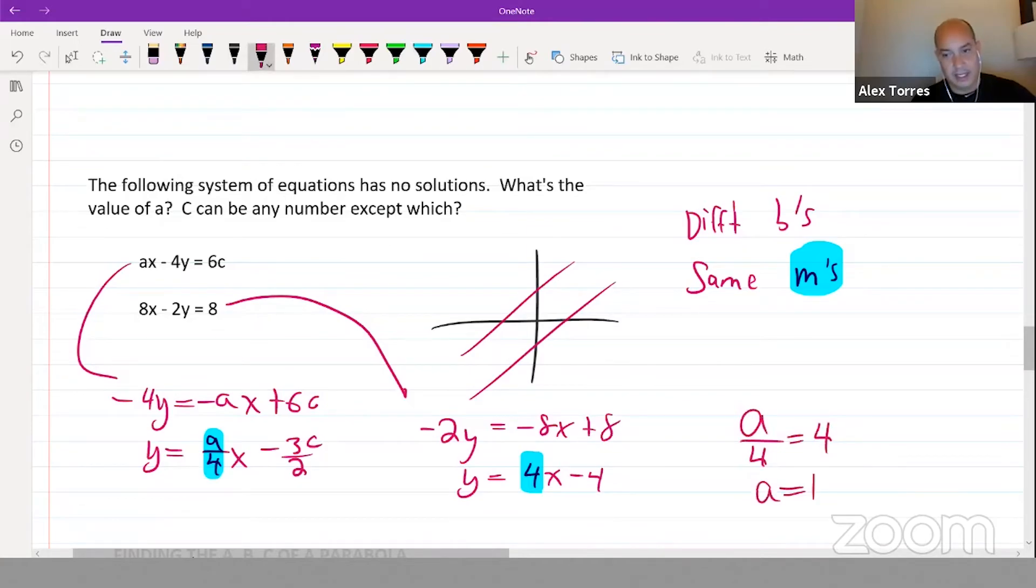For the y-intercepts to be different, minus 3 over 2 times c cannot be equal to negative 4. These two guys would be in a position of being the y-intercept, so they cannot be equal to each other. I'm going to solve it as if it were equal, and that'll tell us what number we're not able to have. Multiply both sides by negative 2 over 3.